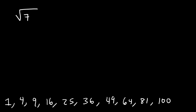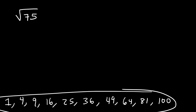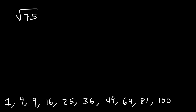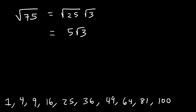Let's simplify the square root of 75. This is not a perfect square, but what I recommend is breaking down 75 into two numbers, one of which is a perfect square. Looking at the list, 75 is a multiple of 25. If you divide 75 by 25, you get 3, so 25 times 3 is 75. The square root of 25 is 5, so the square root of 75 simplifies to 5 square root 3.